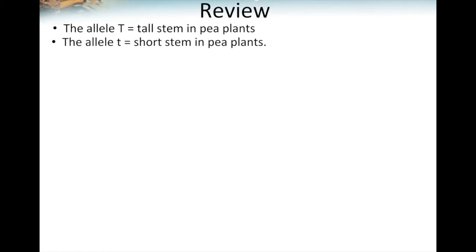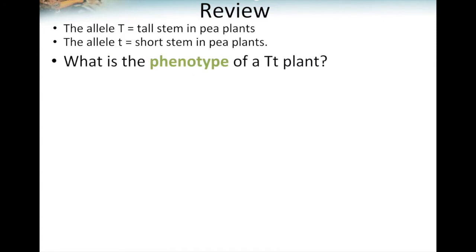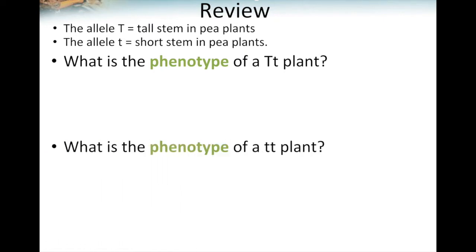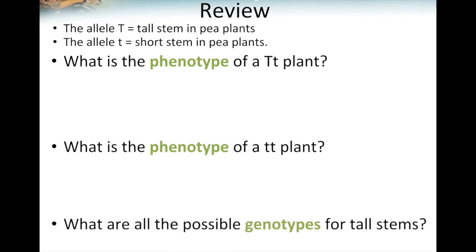Tall stems is a dominant trait. Pea plants could also have short stems, represented with the allele lowercase T. Because it's lowercase, short stems are the recessive trait. The first question is: what is the phenotype of a heterozygous plant? What is the phenotype of a homozygous recessive plant? And what are all the possible genotypes for tall stems?